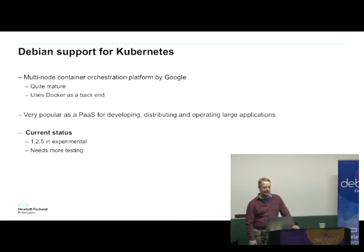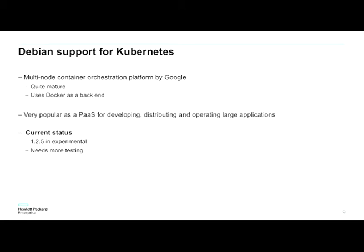Another piece of software you might have heard about is Kubernetes — a container orchestration platform that uses Docker as a backend, though you can use other backends. It's been going for a long time and it's very popular basically as a PaaS, a platform for developing and distributing large multi-node applications. This is in Debian as well, but only in experimental. Almost all of the container software is written in the Go language, which is really interesting — there's a lot of interest in using Go for writing system software. Kubernetes is in experimental and hasn't really been tested that much yet.